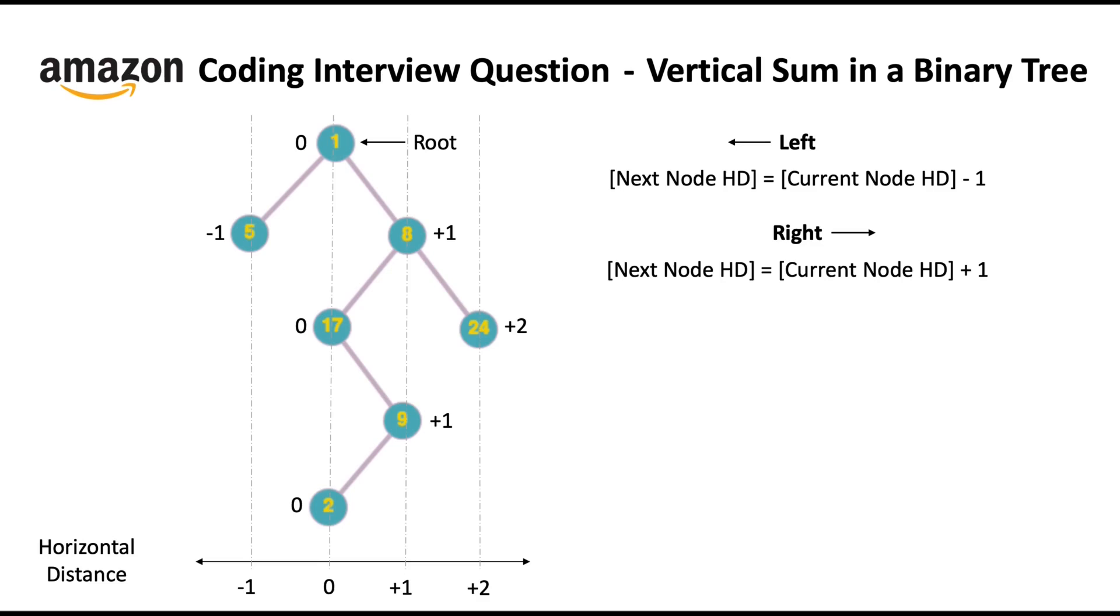Now that we know the horizontal distance of each node, we need to store the vertical sums for different horizontal distances with the help of a data structure. So yeah, it's HashMap. HashMap is an associative container that stores elements in a map fashion. Each element has a key value and a map value. And no two map values can have the same key values.